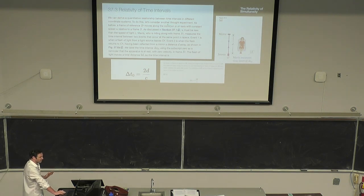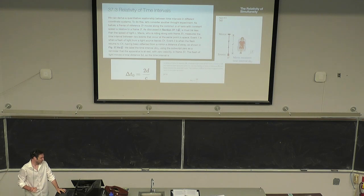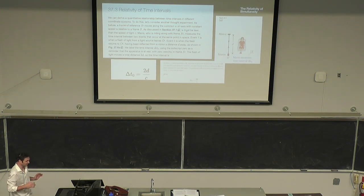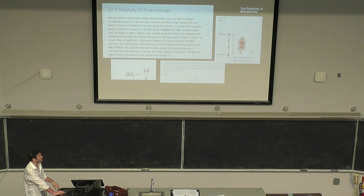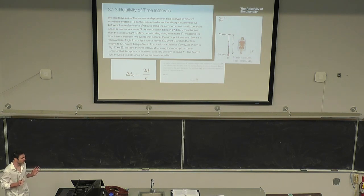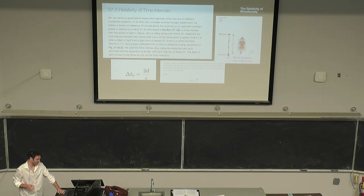We can derive a relationship between time intervals in different coordinate systems by considering a thought experiment. We have a frame S prime that moves along the common X/X prime axis with constant speed U relative to frame S. U must be less than the speed of light. Our observer on the train, Mavis, riding along with frame S prime, measures the time interval between two events that occur at the same point in space. Event one is when a flash of light from source O prime goes off; event two is when the flash returns to O prime. We send a light ray and reflect it off a mirror a distance D away, as shown in this figure.